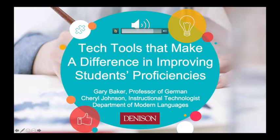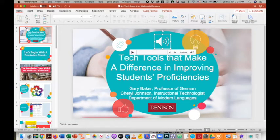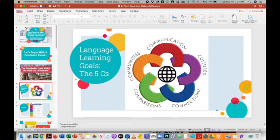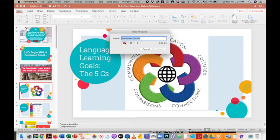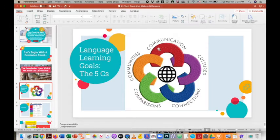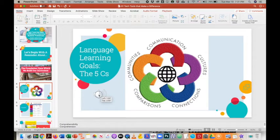Now let's return to editing our PowerPoint presentation. Next, I will select a new slide from the thumbnails on the left-hand side, and after I select that slide, I will once again choose to insert audio and record. I will repeat all of the steps that you saw earlier, including moving the icon to a more convenient place.